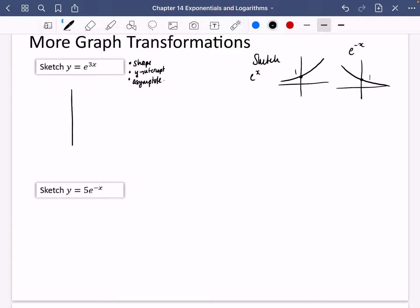So y equals e to the 3x. It is just going to be as the general shape, an exponential growth graph. The y-intercept, when x is equal to 0, that would be y equals e to the 0. Well, anything to the power of 0 is 1. And the asymptote, yeah, it's still here. The asymptote is in the same place.